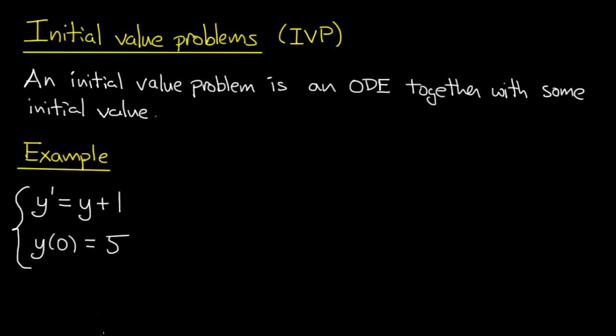So let's look at an example of an initial value problem. An example would be y prime, the derivative of y is equal to y plus 1. That's the ordinary differential equation. And then we have an initial value, y at 0 is 5. That needs to be satisfied.